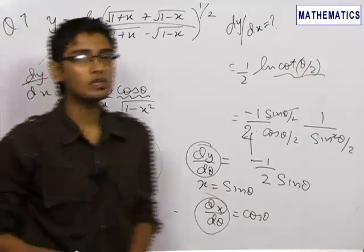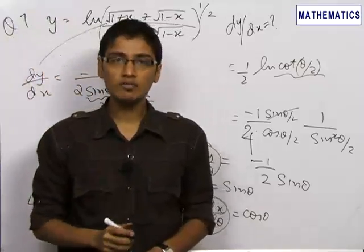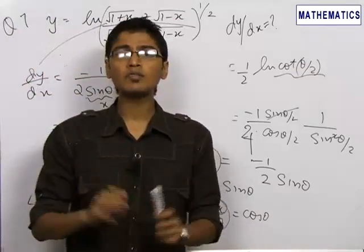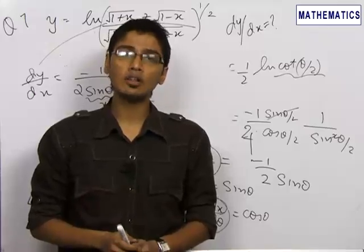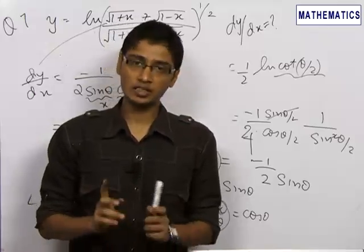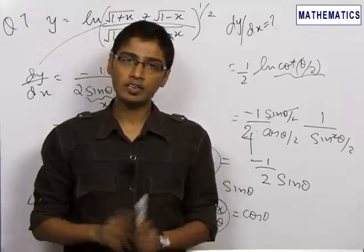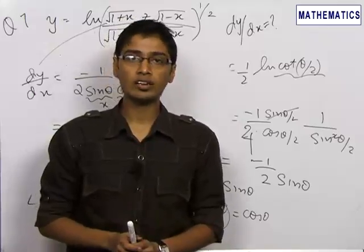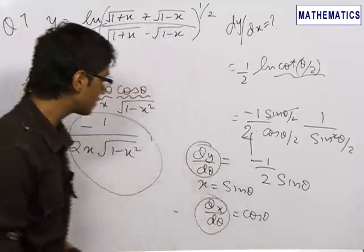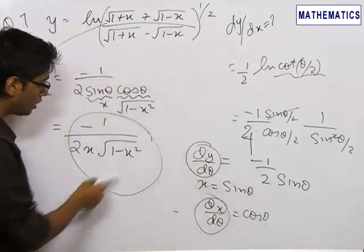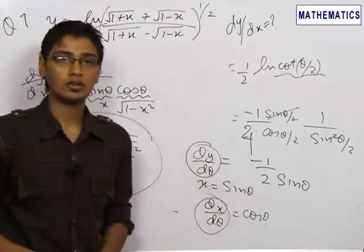So this was a substitution problem and the thing which we learned from this problem was that same type of substitution does not always help in all questions. So we need to check the question first, then analyze it and then try out various different substitutions in order to get the final answer. So final answer is minus 1/(2x√(1-x²)).